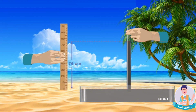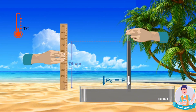The mercury inside the glass tube exerts pressure on the mercury in the container due to its weight. The flow continues until the pressure exerted by the mercury in the glass tube equals the atmospheric pressure. When the two pressures are equal, the mercury level remains constant — at 76 cm at sea level and at a temperature of 0 degrees.